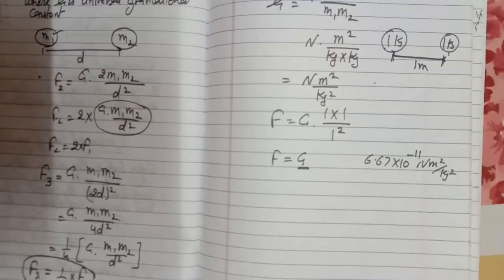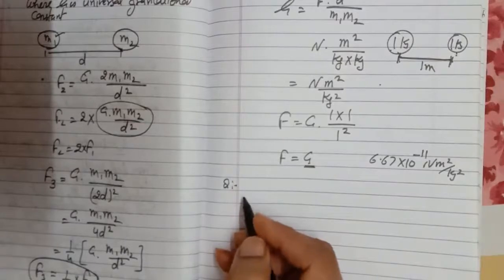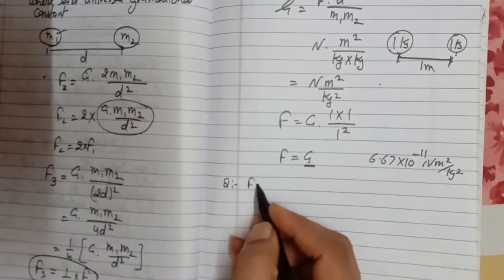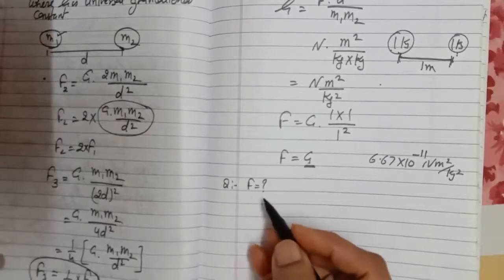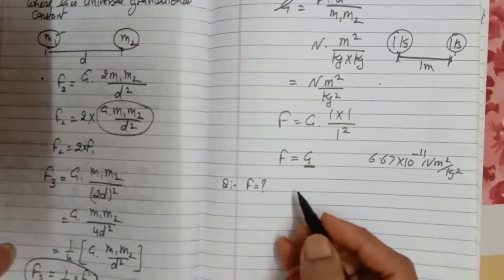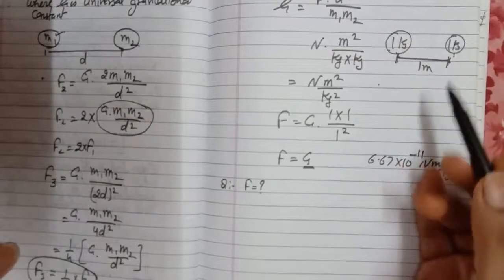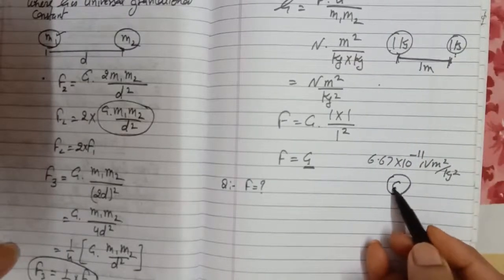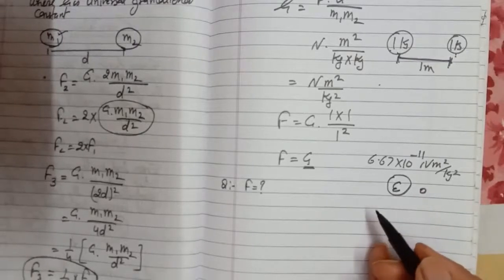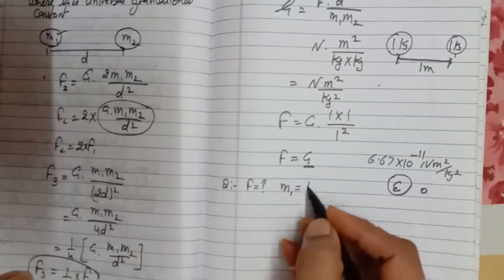I am taking one numerical example. We have to calculate the force of gravitation — specifically, the force F due to the earth on a ball. So we need to find the gravitational force between the earth and the ball. The ball has a mass M1 equal to 1 kg.